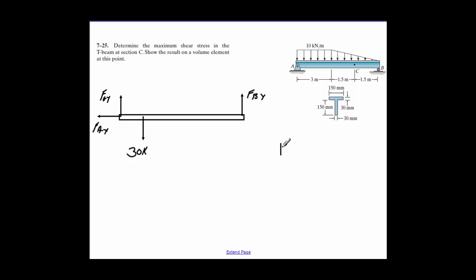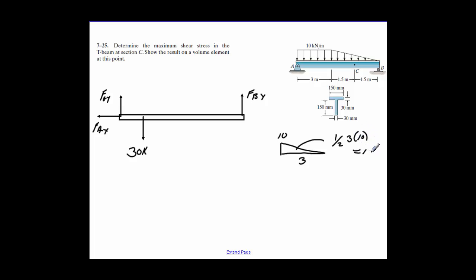So if we do a rough sketch of that — the base is 3 and the height is 10. The area would be one-half times the base, which is 3, times 10, which would be 15.